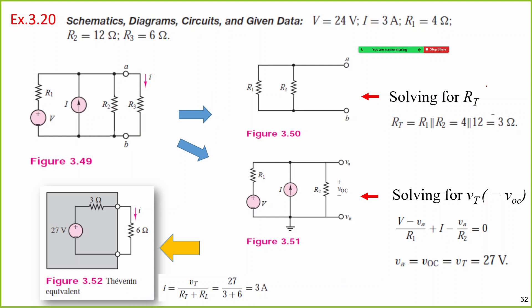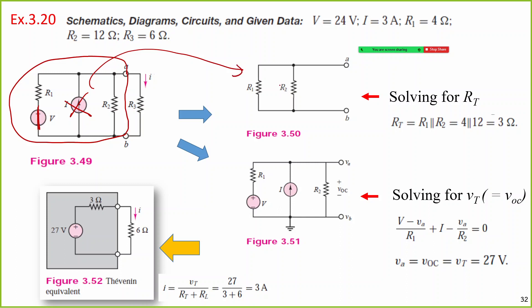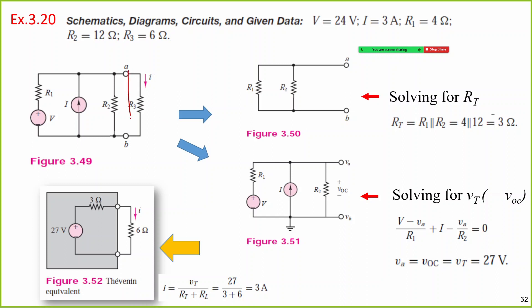Let's see another example. We have a circuit with V=24V, I=3A, R1=4Ω, and R2=12Ω, with terminal A and B. To find the Thevenin equivalent, first compute Rth by setting the voltage source to short circuit and the current source to open circuit. We are left with R1 parallel R2: 4Ω parallel 12Ω gives 3Ω. So Rth equals 3Ω.